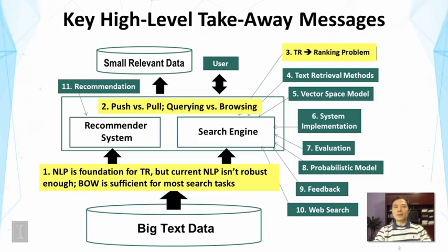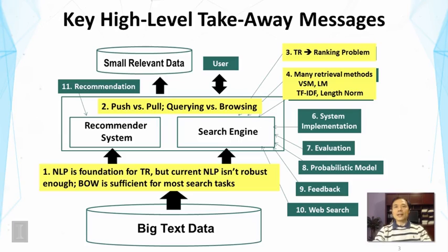We talked about a number of issues related to search engines. We talked about the search problem and framed it as a ranking problem. We talked about a number of retrieval methods, starting with an overview of the vector space model and the probabilistic model, then the vector space model in depth, and later the language modeling approach, which is a probabilistic model. The main takeaway is that these retrieval functions tend to look similar and generally use various heuristics. The most important ones are TF-IDF weighting and document length normalization, and TF is often transformed through a sublinear transformation function.